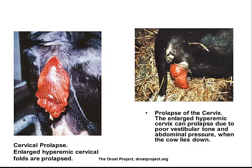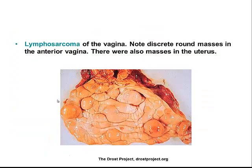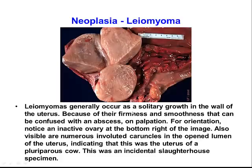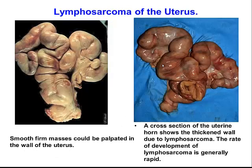Prolapse of the cervix also occurs from time to time, and we will discuss that more later. Tumours involving the vagina or the uterus can occur — they're not very common but they do occur. This one is a lymphosarcoma involving part of the cranial vagina. This is a leiomyoma associated with the uterus in a postpartum cow — if it is exterior to the uterus it may not interfere with fertility, but you may pick it up on rectal palpation as a discrete lump and need to differentiate it from an abscess. There is also lymphosarcoma as a disseminated condition throughout the uterus.